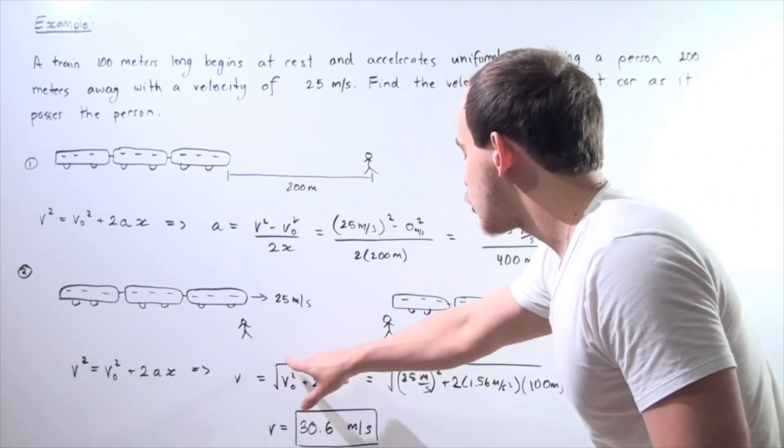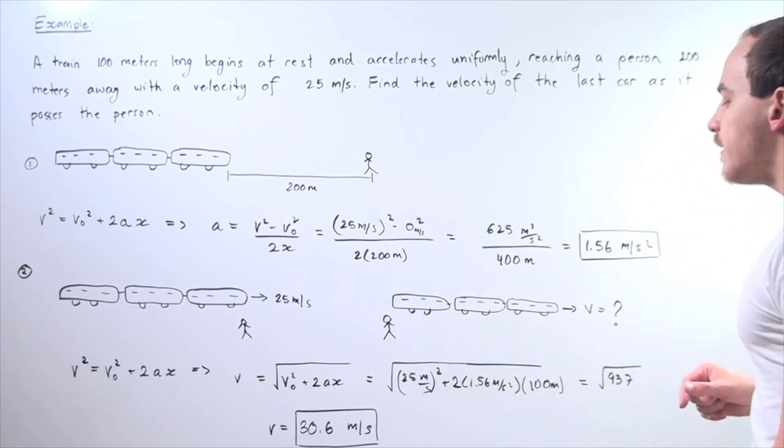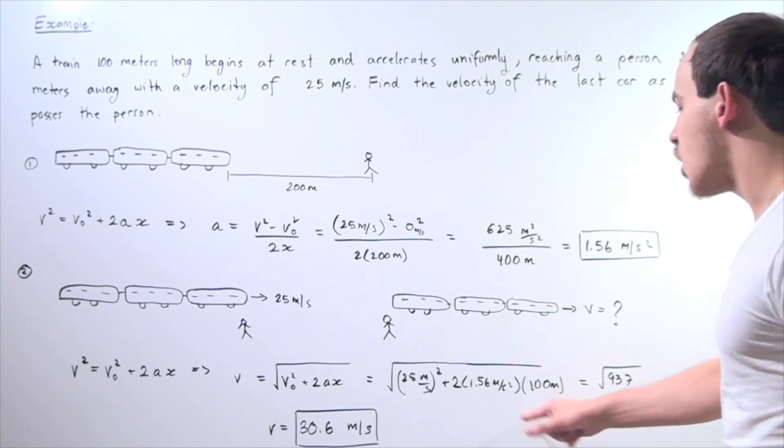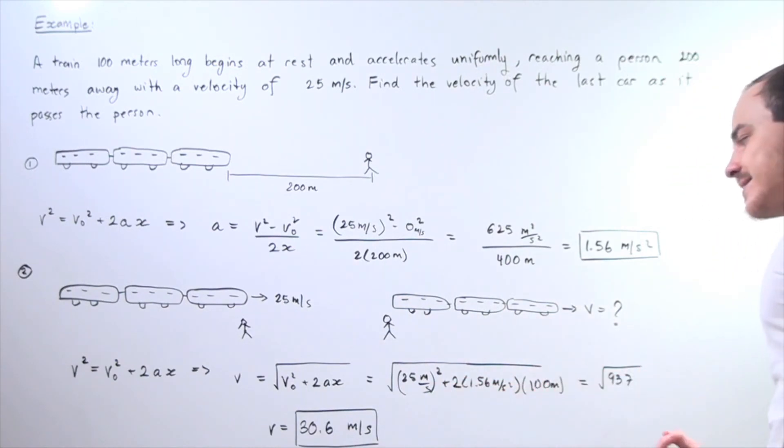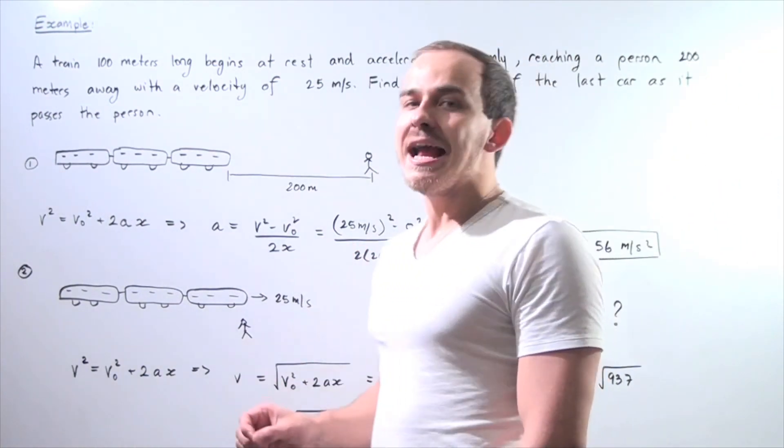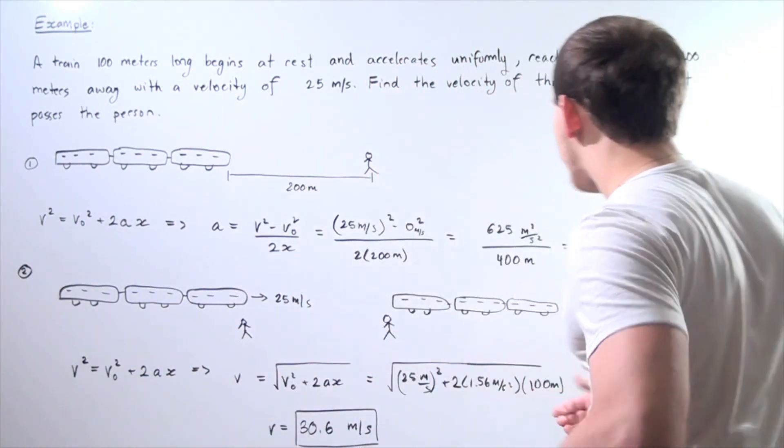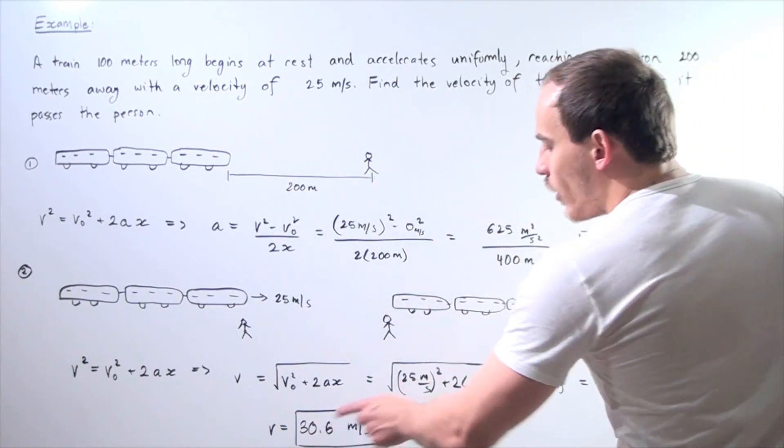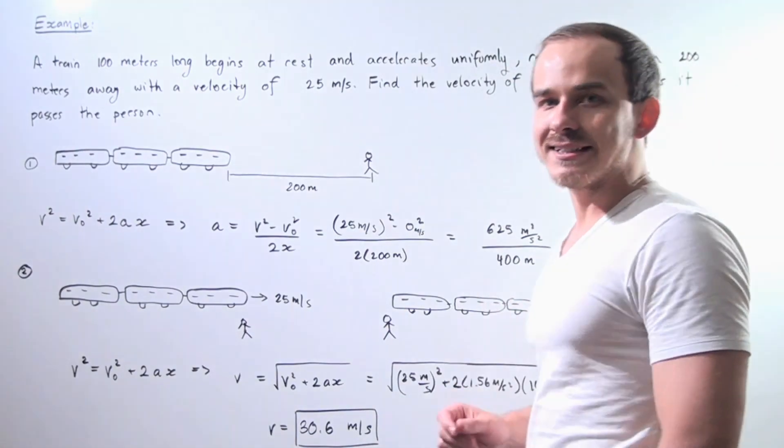So we multiply these guys out, we add them up, and we get radical 937. So our v final, in other words, our final velocity of the train as it passes the person is 30.6 meters per second.